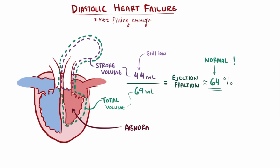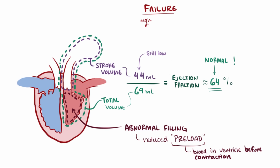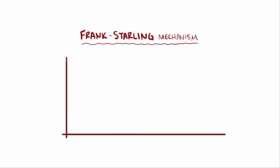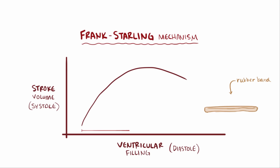In diastolic failure, the problem is caused by abnormal filling of the ventricle so that the chamber doesn't get fully loaded or stretched out in the first place. Another term for this is reduced preload, the volume of blood in the ventricle right before the ventricular muscle contracts. An important relationship between systolic and diastolic function is the Frank-Starling mechanism, which shows that loading up the ventricle during diastole and stretching out the cardiac muscle makes it contract with more force, increasing stroke volume during systole — like stretching a rubber band, except cardiac muscle is actively contracting.